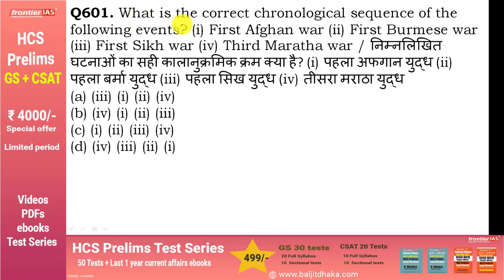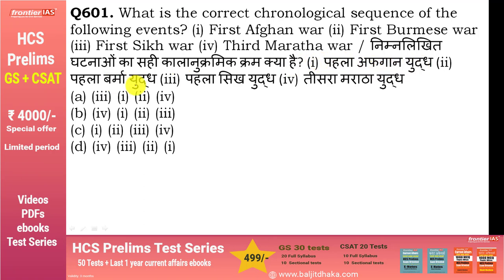पहला question: What is the correct chronological sequence of the following events? First Afghan war, First Burmese war, First Sikh war, Third Maratha war. निम्नलिखित घटनाओं का सही कालानुक्रमिक क्रम क्या है? पहला अफगान युद्ध, पहला बर्मा युद्ध, पहला Sikh युद्ध, तीसरा Maratha युद्ध।